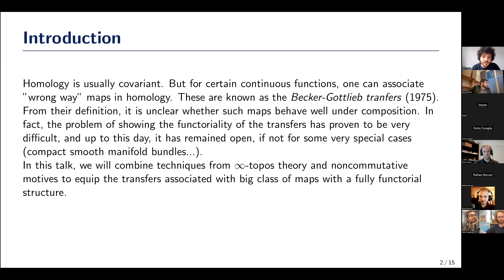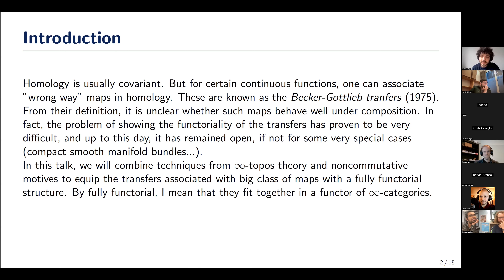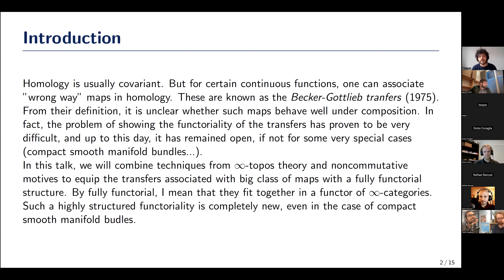From the definition, it's not clear whether these wrong-way maps can be assembled into a contravariant functoriality for homology. As naive as the question might look, it has proven to be a very difficult problem to check that these transfers behave well under compositions, and it is still open today, even though it's known for some special cases like proper fiber bundles between smooth manifolds. What I will do today is combine techniques from topos theory, non-commutative motives, and dualizable categories to construct a big class of maps to which you can associate transfers, and I will show these transfers assemble into a fully functorial structure — a functor of infinity categories.